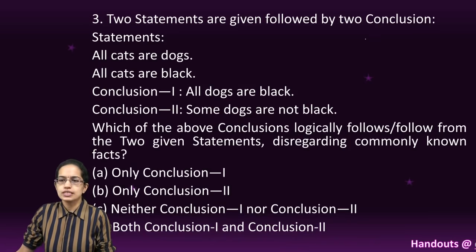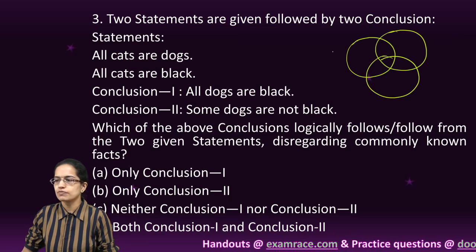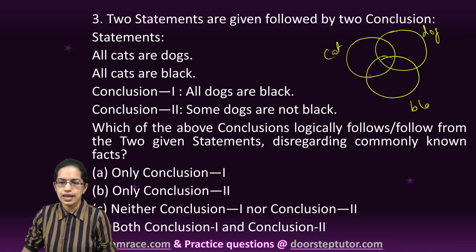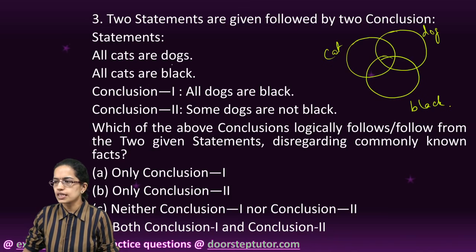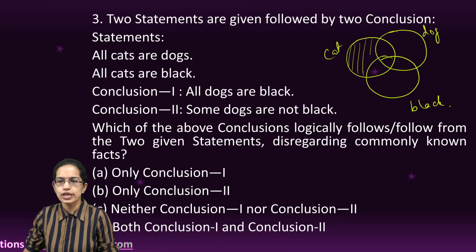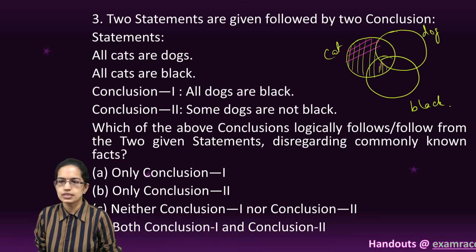The next question is a syllogism problem. If you have any doubts, you can go back to our lectures on syllogism. We have cats, dogs, and black. The first statement says all cats are dogs, meaning there's no cat outside this region. The next statement says all cats are black, so this shaded region would apply.